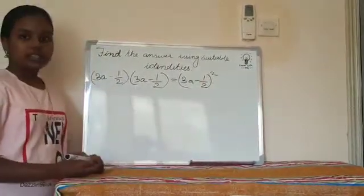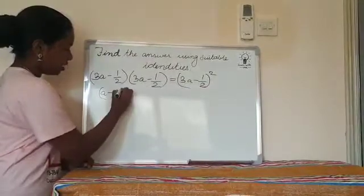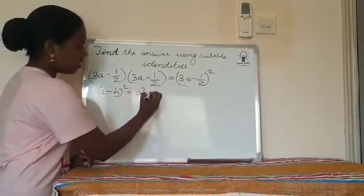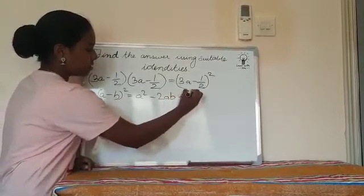The identity which we can use is (a - b) the whole square, that is a² - 2ab + b².